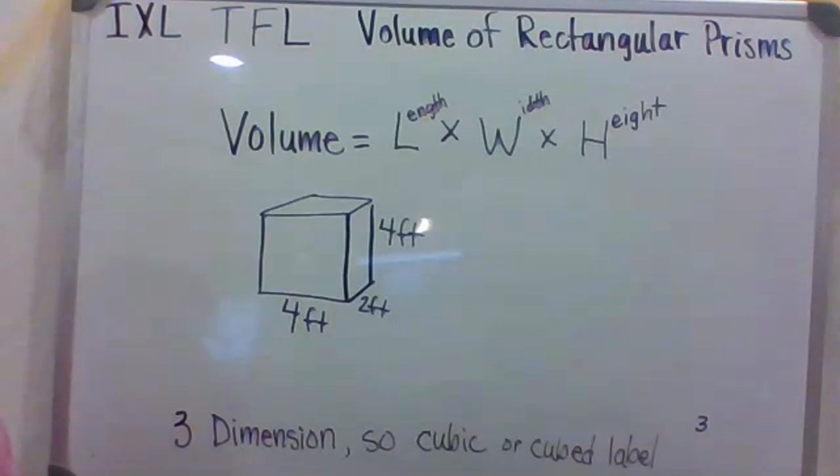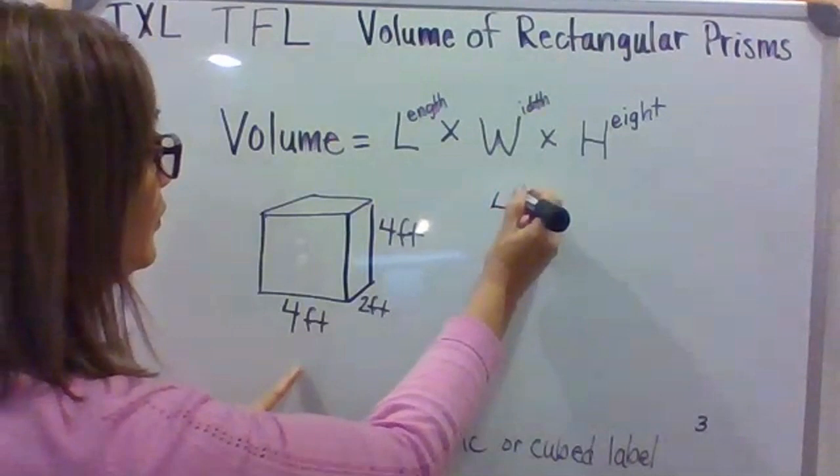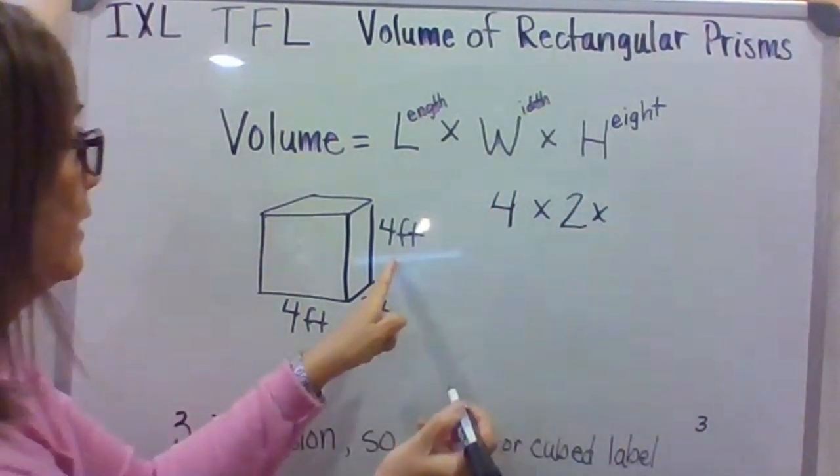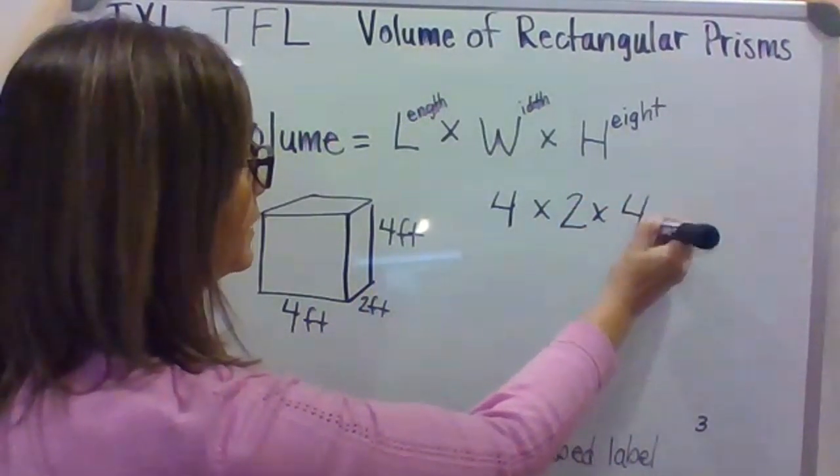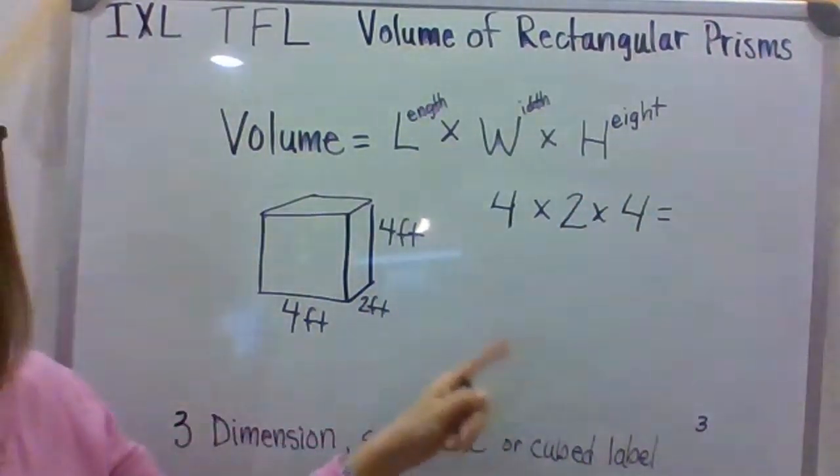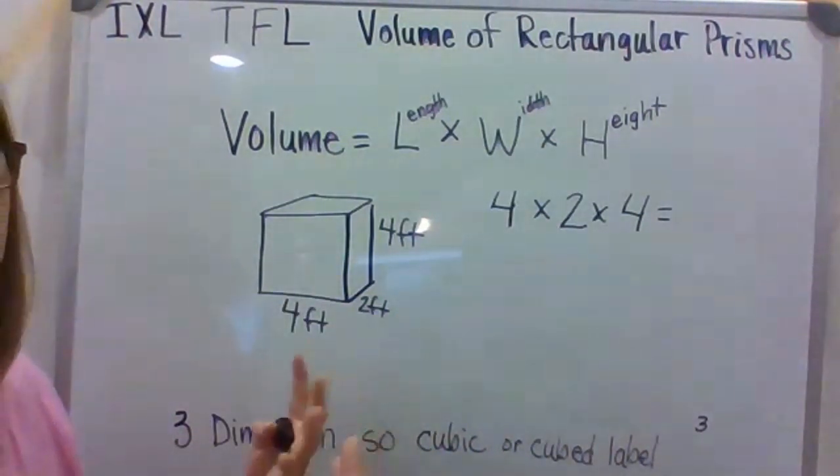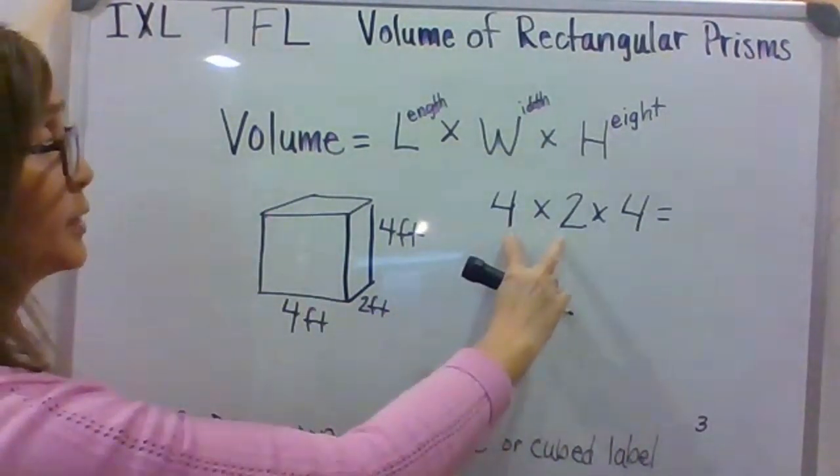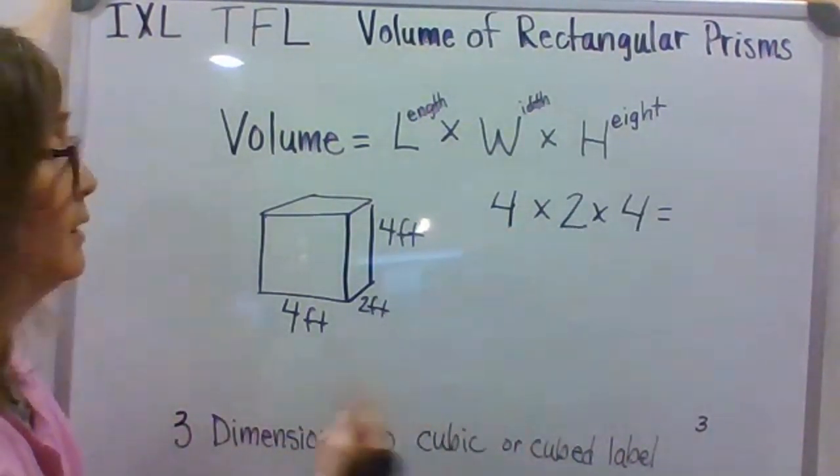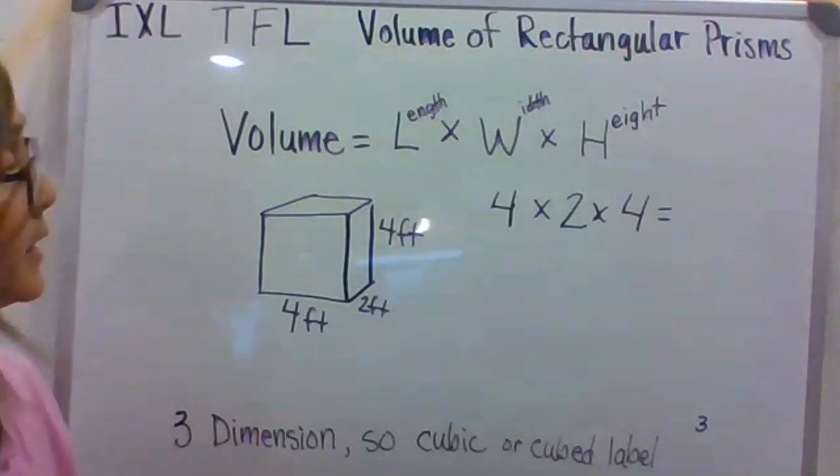So, again, to model this out for you, you take your length times your width times your height and you write them out as a math equation. So, length is 4, width is 2, and the height is 4. So, you can group those numbers together because, remember, multiplication, the commutative property, you can just group it anyway. You can do it anyway, and we'll get the same product.